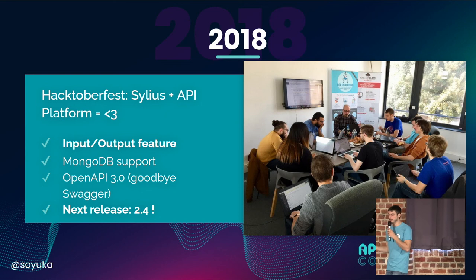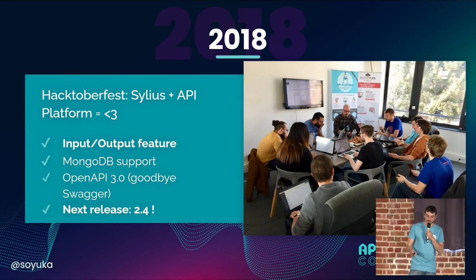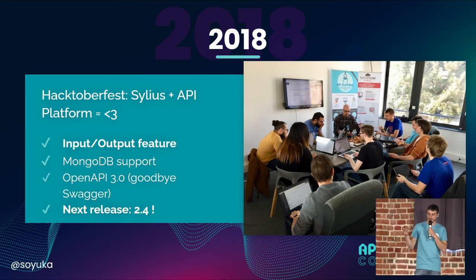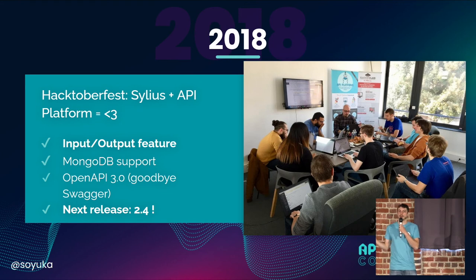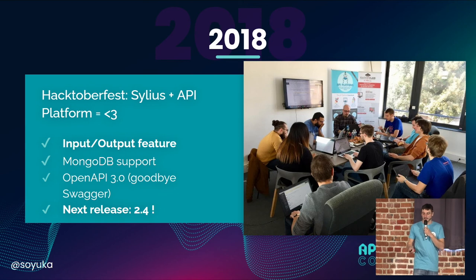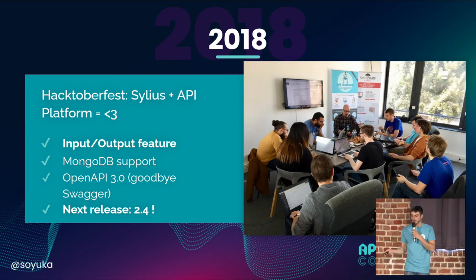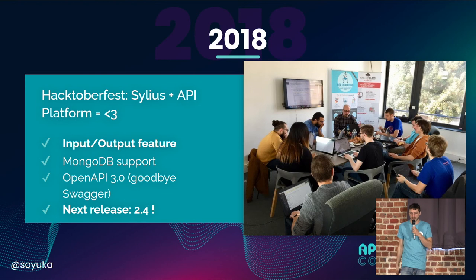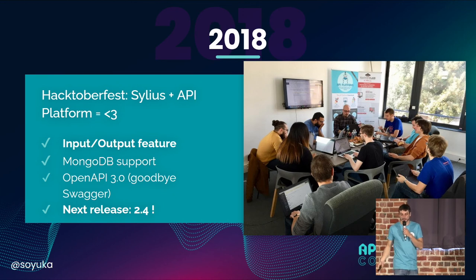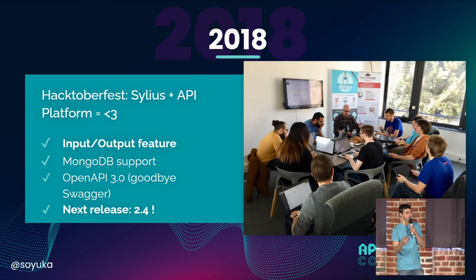In 2018, we had an active request in Lille with some guys from Silus who came and we tried to work on how we could merge the two or use API Platform inside Silus. For example, we added the input-output feature. It also came out with MongoDB support, OpenAPI 3.0, and the release that came out a bit later was the 2.4.